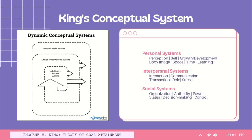The theory is based on the conceptual system of King that has three interacting systems, where each has different concepts. For personal systems, the concepts of perception, self, growth and development, body image, space, time, and learning are present. For the interpersonal systems, we have interaction, communication, transaction, role, and stress. Lastly, the social systems involve organizations, authority, power, status, decision-making, and control.